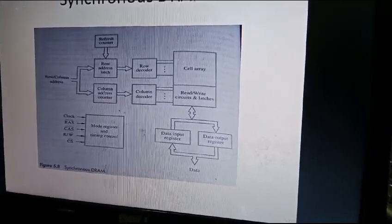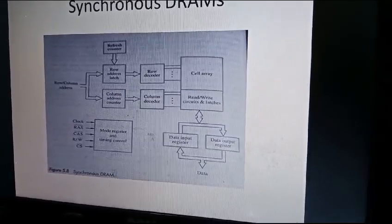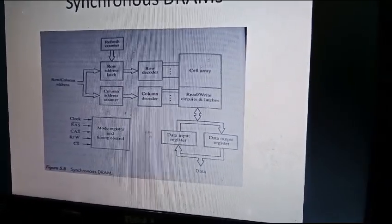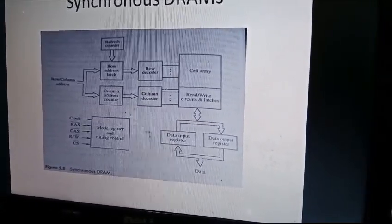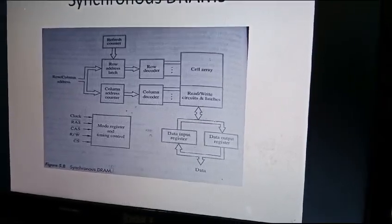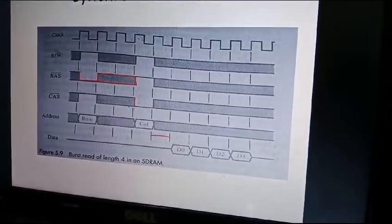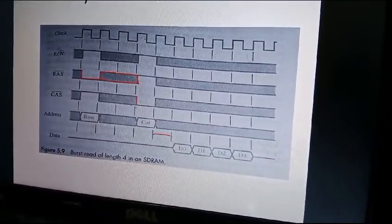The address counter and column address counter automatically increment to send the new column address to the column decoder. The column decoder will select a new column and the data in that column is sent to output data, so the very next byte comes out of the memory.